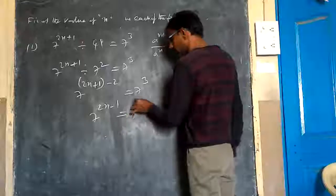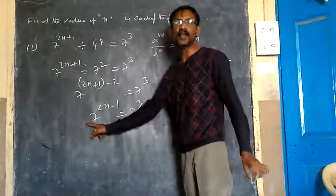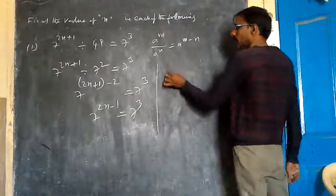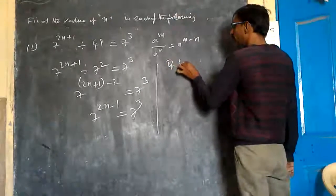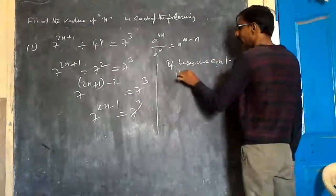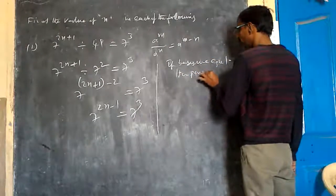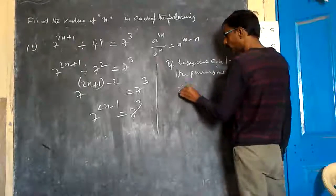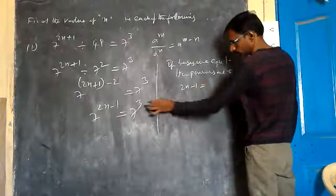That equals 7 to the power of 3. Again, bases are equal, powers are equal. Is it correct? Yes, sir. Therefore, if bases are equal, then powers are equal. Therefore, 2n minus 1 equals 3. 2n equals 3 plus 1.